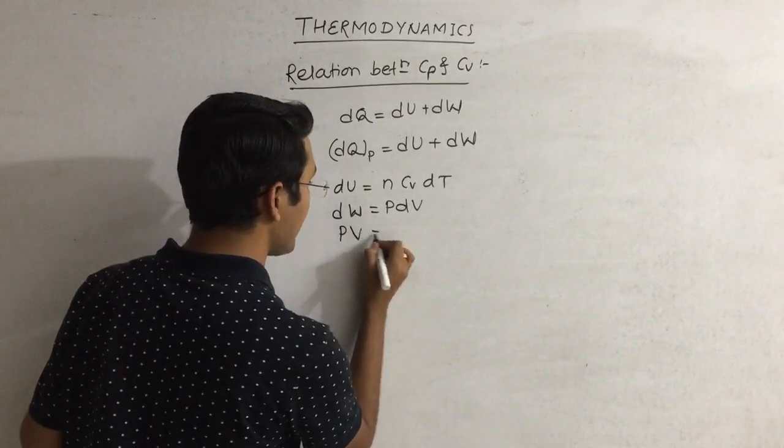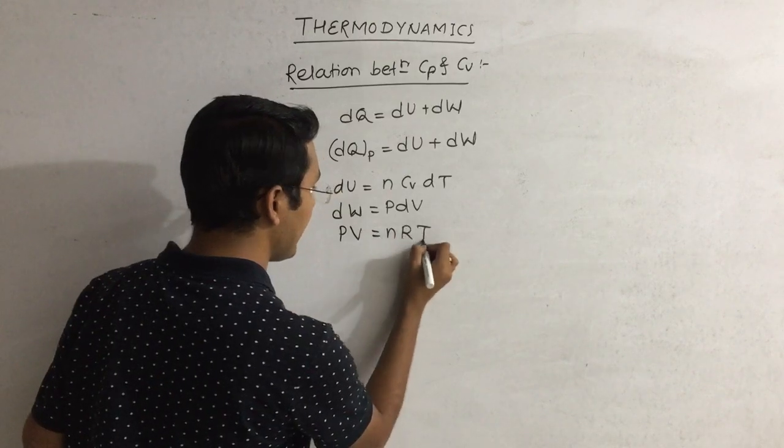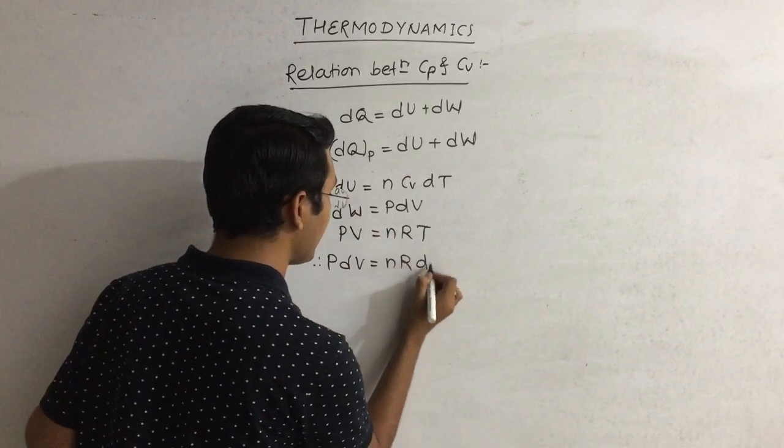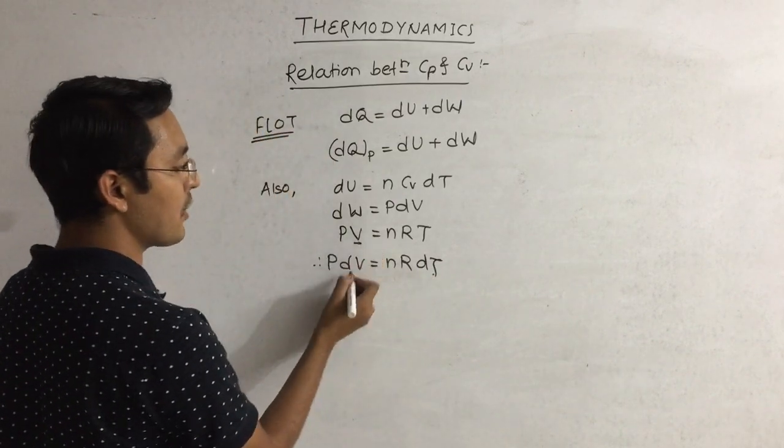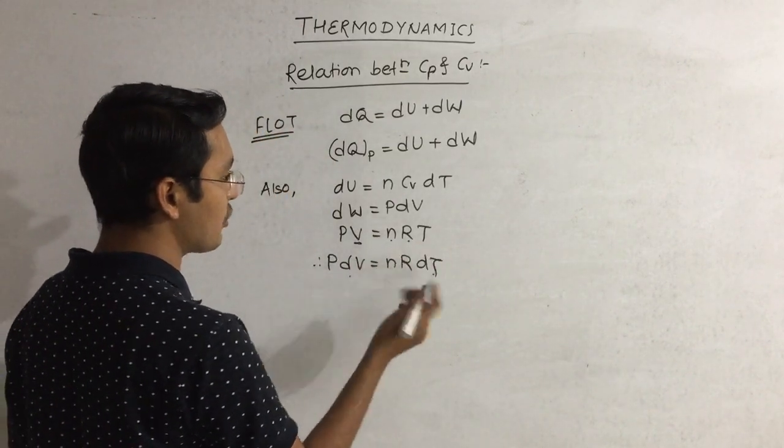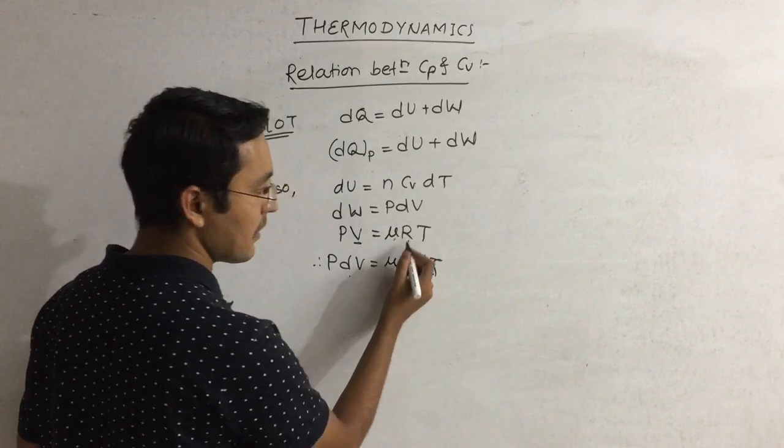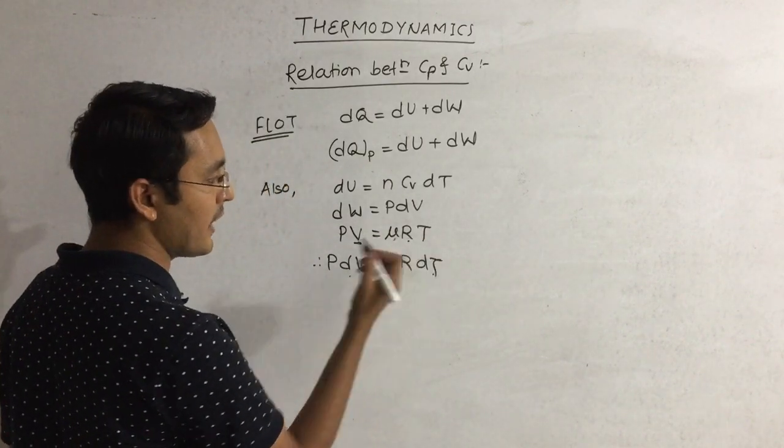Also, we know that PV is equal to nRT, therefore P dV is equal to nR dT. Because if V changes to dV, then T will change to dT.